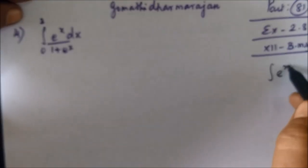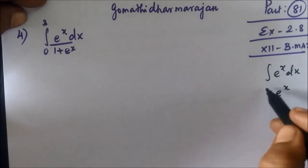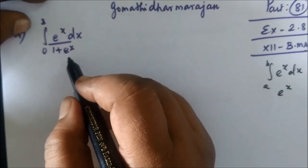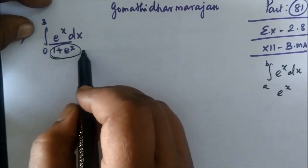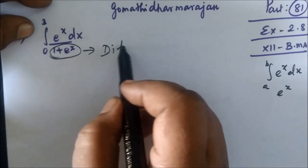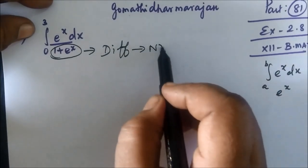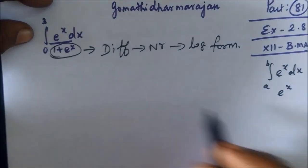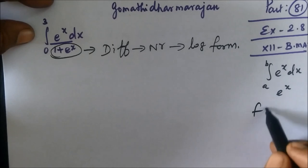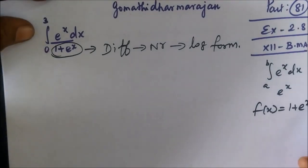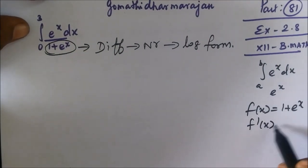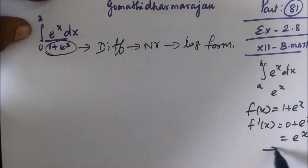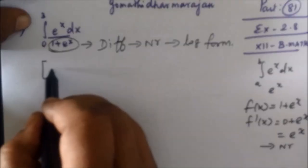We know integral of e^x dx equals e^x. And one more thing: when the denominator in differentiation appears in the numerator, we can write it in log form. So f(x) equals 1 plus e^x, and f'(x) equals e^x. Since the derivative of the denominator appears in the numerator, we can write it in log form.